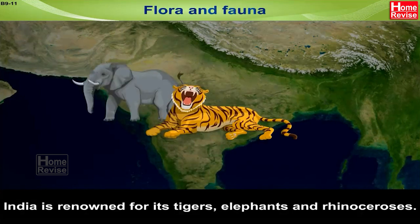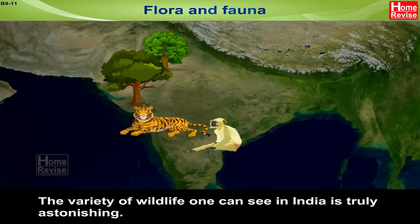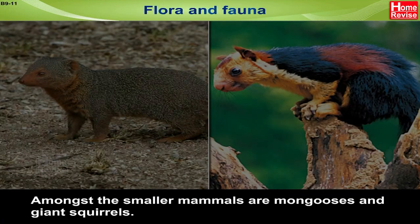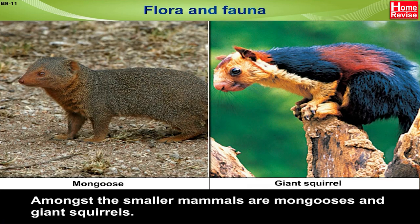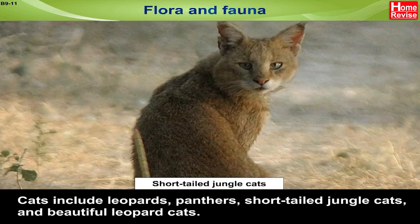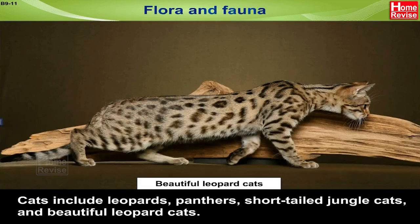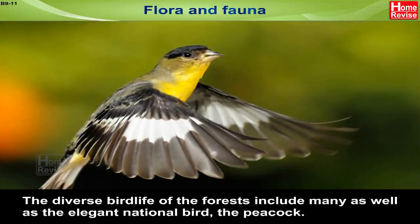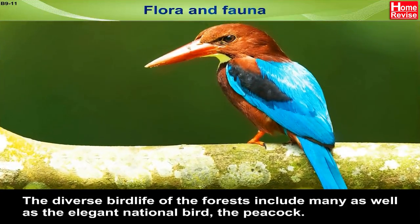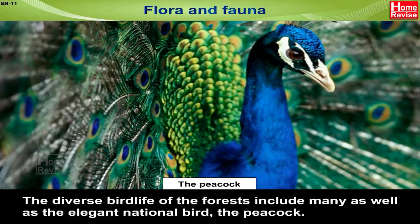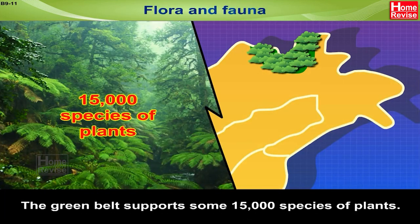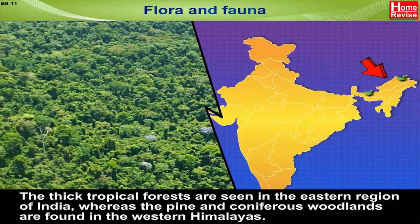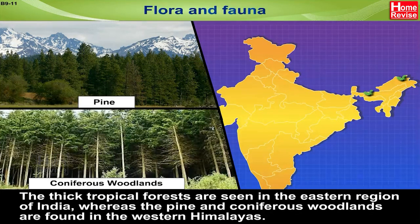India is renowned for its tigers, elephants, and rhinoceroses, and the variety of wildlife one can see in India is truly astonishing. Amongst the smaller mammals are mongooses and giant squirrels. Cats include leopards, panthers, short-tailed jungle cats, and leopard cats. India is blessed with over 2,000 species of birds, including the elegant national bird, the peacock. The green belt supports some 15,000 species of plants. Thick tropical forests are seen in the eastern region, whereas pine and coniferous woodlands are found in the western Himalayas.